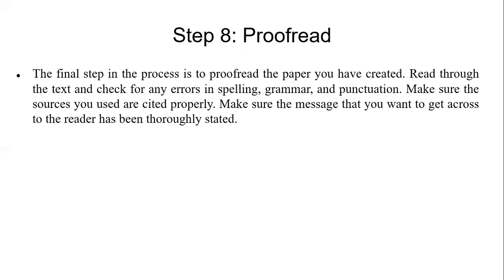Step number eight: proofread. The final step in the process is to proofread the paper you have created. Read through the text and check for any errors in spelling, grammar, and punctuation. Make sure the sources you use are cited properly. Make sure the message you want to get across to readers has been thoroughly stated. Check for errors and mistakes in grammar, punctuation, spelling, and sentence structure.